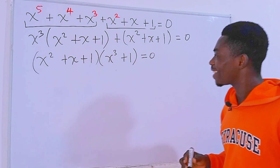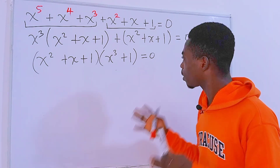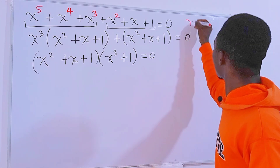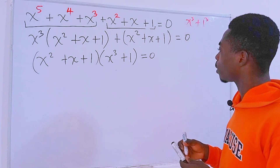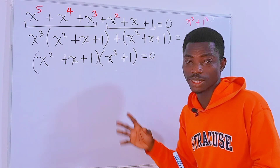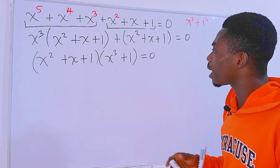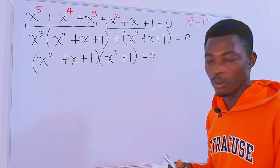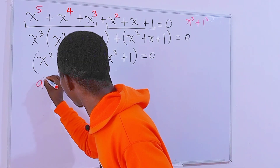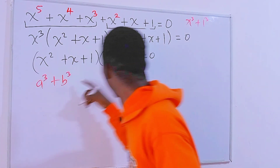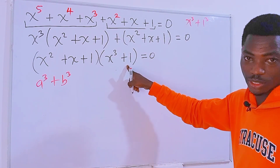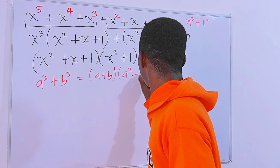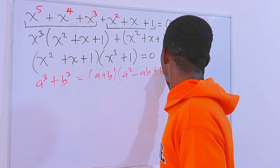We have (x² + x + 1) times (x³ + 1) equals 0. Now let's pay attention to x to the 3rd power plus 1, which is the same as x to the 3rd power plus 1 to the 3rd power. We can get 3 factors from this — so let's use an algebraic identity to find the factors of x³ + 1.